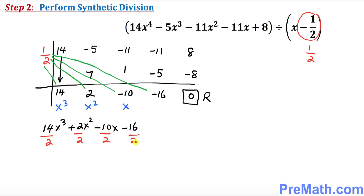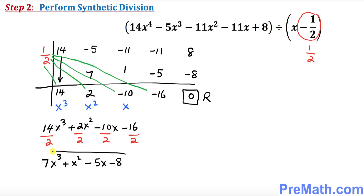Now at this point we are going to divide by 2, just as we did with the divisor in the previous step — we divide across the board by 2. So our complete answer is 7x³ + x² − 5x − 8, and that is our answer. Thanks for watching, and please subscribe to my channel for more exciting video lessons.